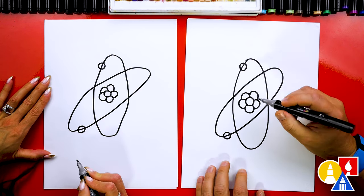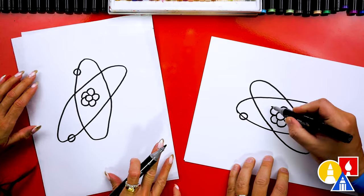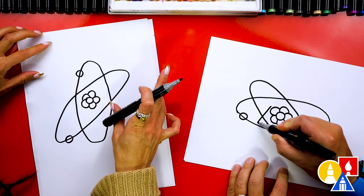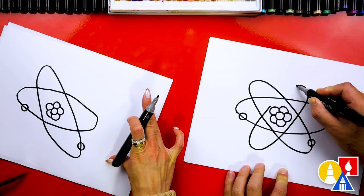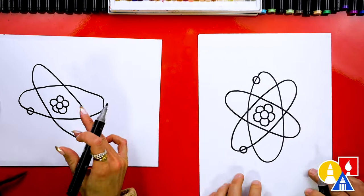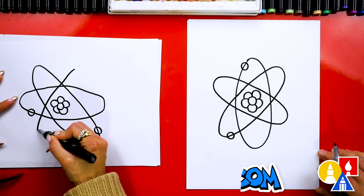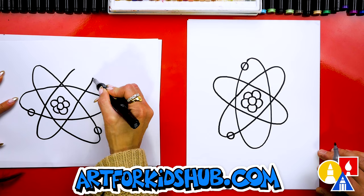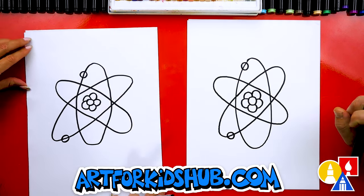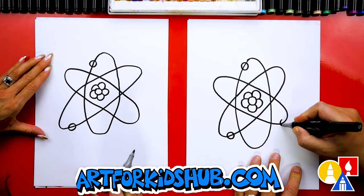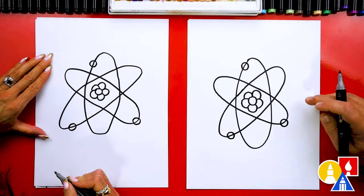These have negative charges. Then I'm going to turn my paper like this diagonal so I can draw the last orbit. I'm going to draw it coming out like this, around, and then connect back where I started. Nice job. I think that makes it a little easier to turn your paper, and then we can also draw the electron on that orbit. And that's it.